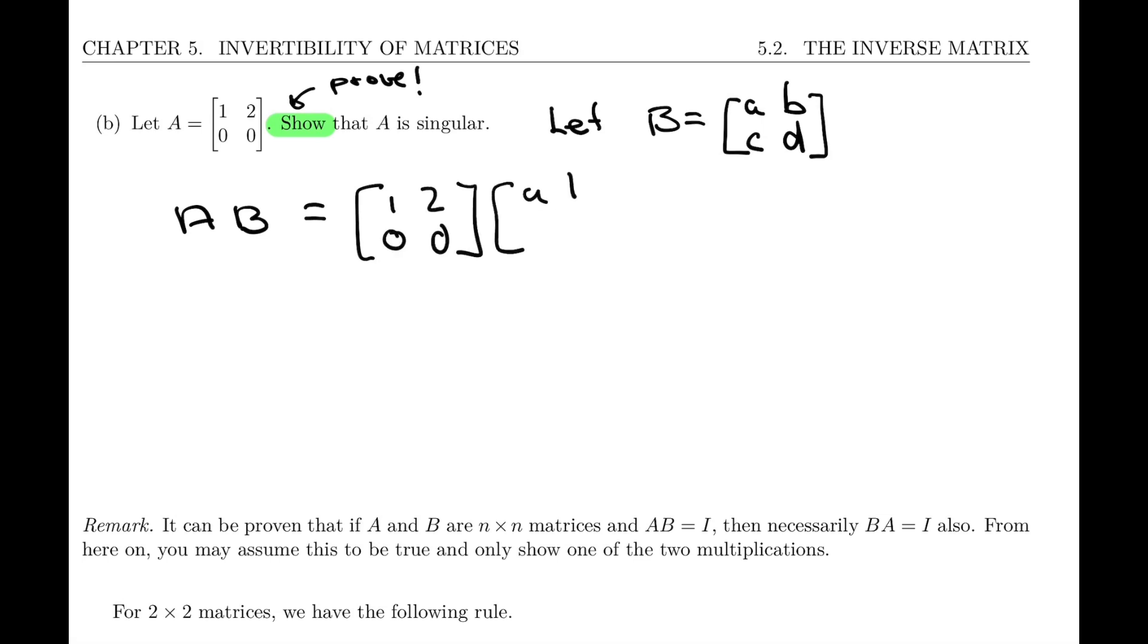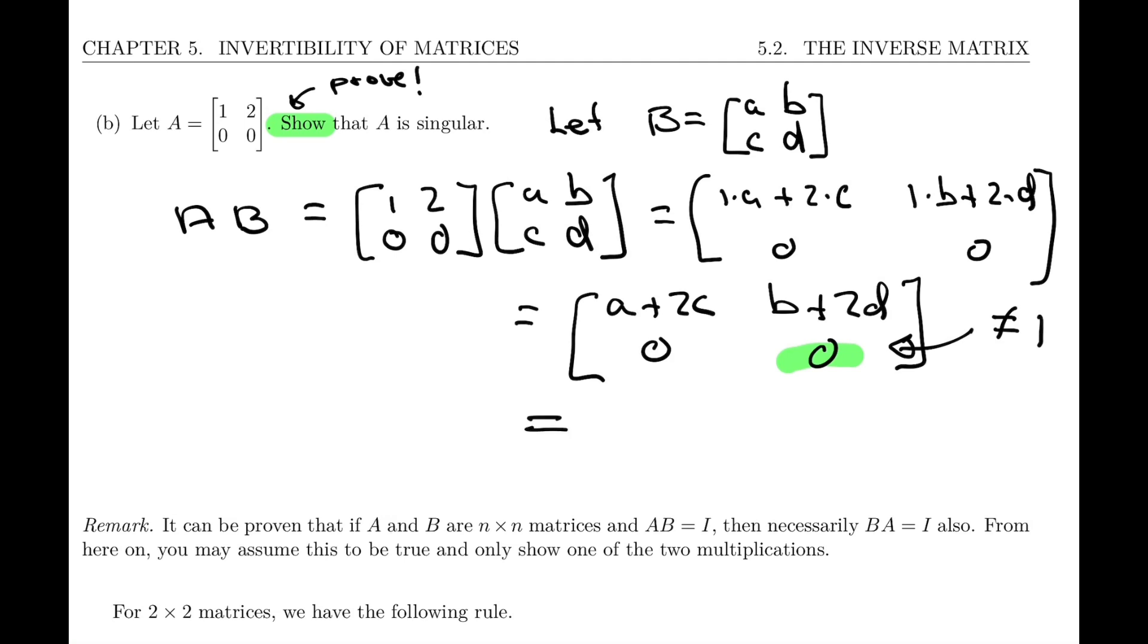[1, 2, 0, 0] times [A, B, C, D]. Let's carry out the multiplication. So 1 times A plus 2 times C, 1 times B plus 2 times D, and 0, 0. And so this will be the matrix [A plus 2C, B plus 2D, 0, 0]. But, of course, that means that this entry cannot be, is not equal to 1. And if that entry is not equal to 1, then no matter what these values of A, B, C, and D are, this cannot be equal to [1, 0, 0, 1]. In other words, it cannot be equal to the identity matrix.